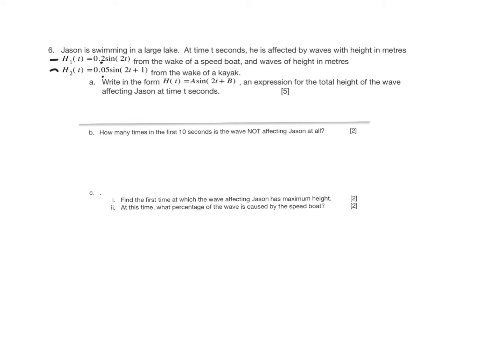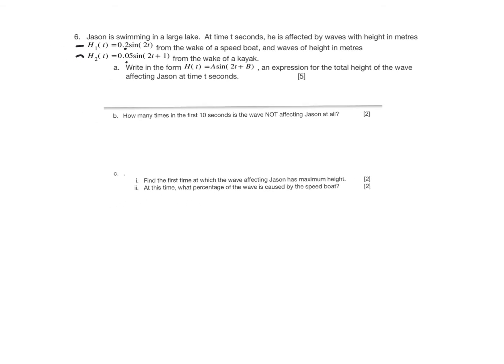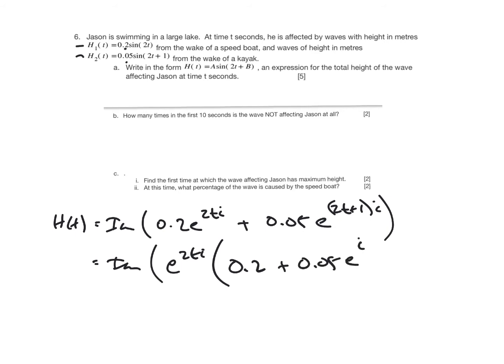Write this in the form together for the total height of the wave. So that means I'm going to take the imaginary part, so h of t is equal to the imaginary part of this first complex number, 0.2e to the 2ti, plus 0.05e to the 2t plus 1i, which is the imaginary part. And if I pull out the e to the 2ti, I'm left with 0.2 plus 0.05e to the i.